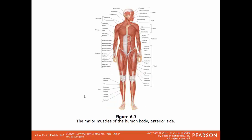There are over 640 muscles in the body, making it difficult to identify even half in one image. Common muscles include the major muscles of the head and neck, the pectoralis major and minor of the chest, the biceps brachii of the arm — the main muscle you flex — the quadriceps of the leg, and the calf muscles of the lower leg.